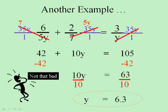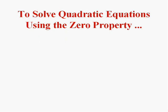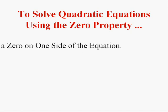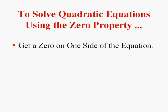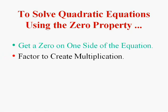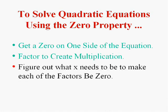Now this also works for quadratic equations. But let me remind you the secret for quadratic equations specifically. Remember we use the zero property to solve these type of equations. We get a zero on one side, factor to create multiplication, and then figure out what it takes to make each of the factors, what x needs to be to make each of the factors be zero. That's the zero property.